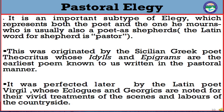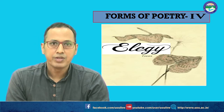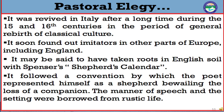The pastoral elegy was originated by the Sicilian Greek poet Theocritus, whose idylls and epigrams are the earliest poems known to us written in the pastoral manner. Later, the Latin poet Virgil perfected this form, and his eclogues and georgics are noted for their vivid treatment of the scenes and labors of the countryside. The form was then revived in Italy during the 15th and 16th centuries during the Renaissance, and other parts of Europe became involved as well.